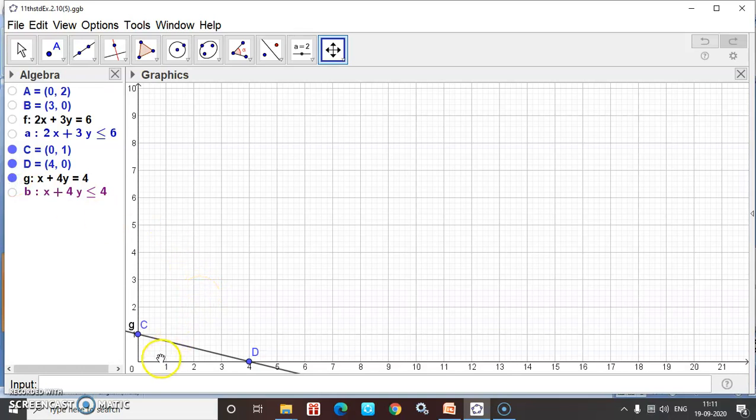Again, there is doubt: where to shade? For example, take point (2,2): 2 plus 4(2) equals 2 plus 8 equals 10. 10 is not less than 4. Then check (0,0): 0 plus 0 equals 0. 0 is less than 4, yes. So shade towards the origin.